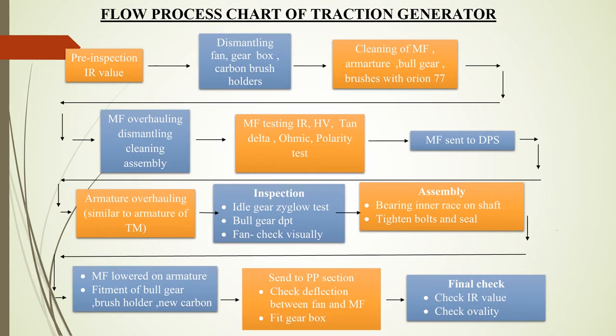The overhauling process of the Traction Generator is pretty much like that of a Traction Motor. The Traction Generator, after being stripped from the power pack section, is brought to the Traction Generator section. The following procedures are followed: pre-inspection, dismantling, cleaning, inspection, assembly, and final checking. Moving on to pre-inspection, the resistance value of the incoming Traction Generator is calculated. Then the Traction Generator is dismantled, wherein the fan, gearbox, and all carbon brush holders are removed.